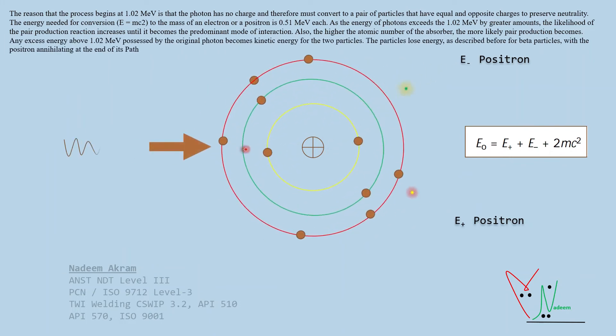Any excess energy above 1.02 mega electron volts possessed by the original photon becomes kinetic energy for the two particles. The particles lose energy, as described before for beta particles, with the positron annihilating at the end of its path.